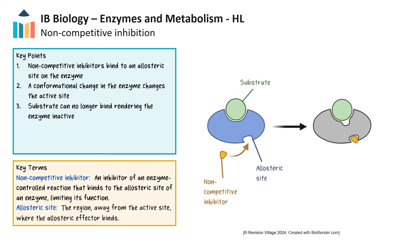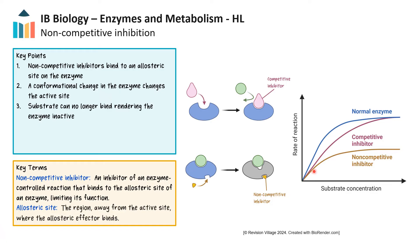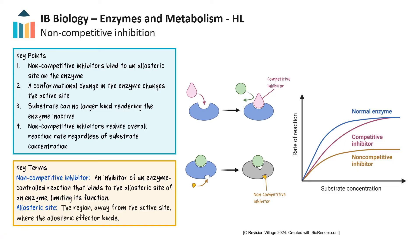Looking at the graph, you can see that in the presence of a noncompetitive inhibitor, the curve rises more slowly and plateaus at a lower level compared to the normal enzyme-substrate reaction curve. The reaction rate is reduced at all substrate concentrations, because noncompetitive inhibitors bind to a site on the enzyme other than the active site, altering the enzyme's shape or function so it cannot catalyze the reaction as efficiently. As a result, some enzymes are rendered inactive regardless of how much substrate is available.